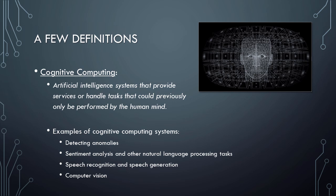Some examples of cognitive computing include systems that can learn to detect anomalies or unusual situations, systems that can perform sentiment analysis, translate languages, or perform other natural language processing tasks, systems that can recognize human speech and learn to generate speech on their own, systems that can recognize objects and images, video, or the world around them, and so on.